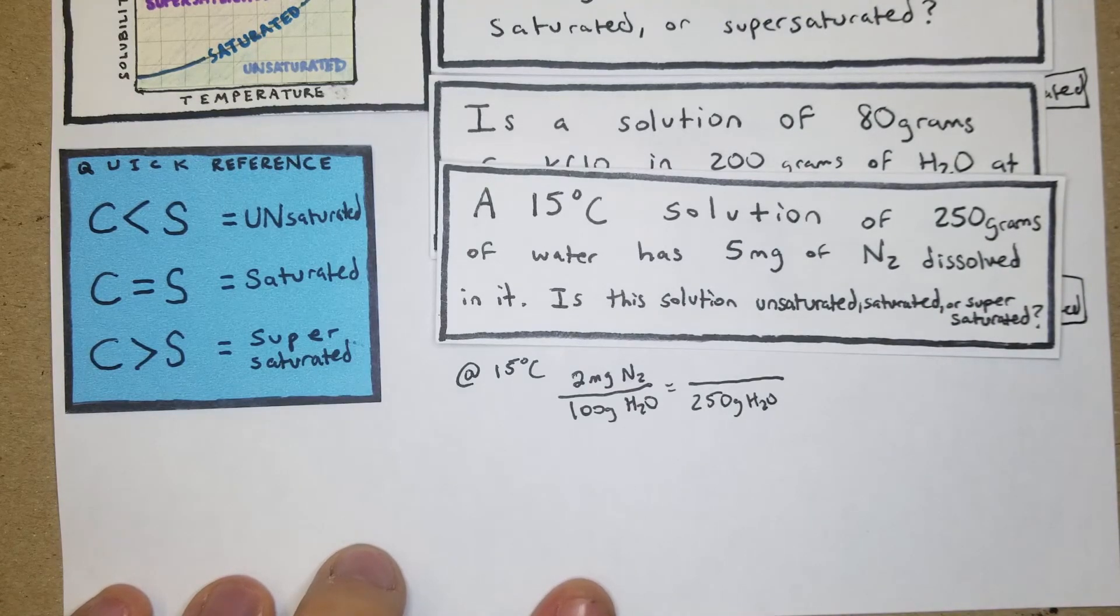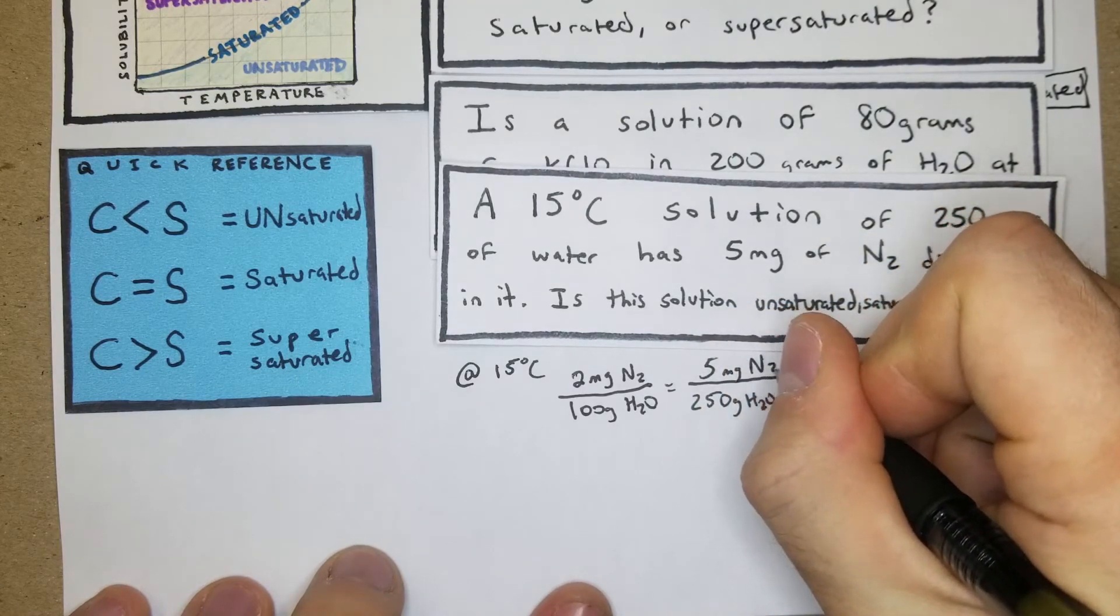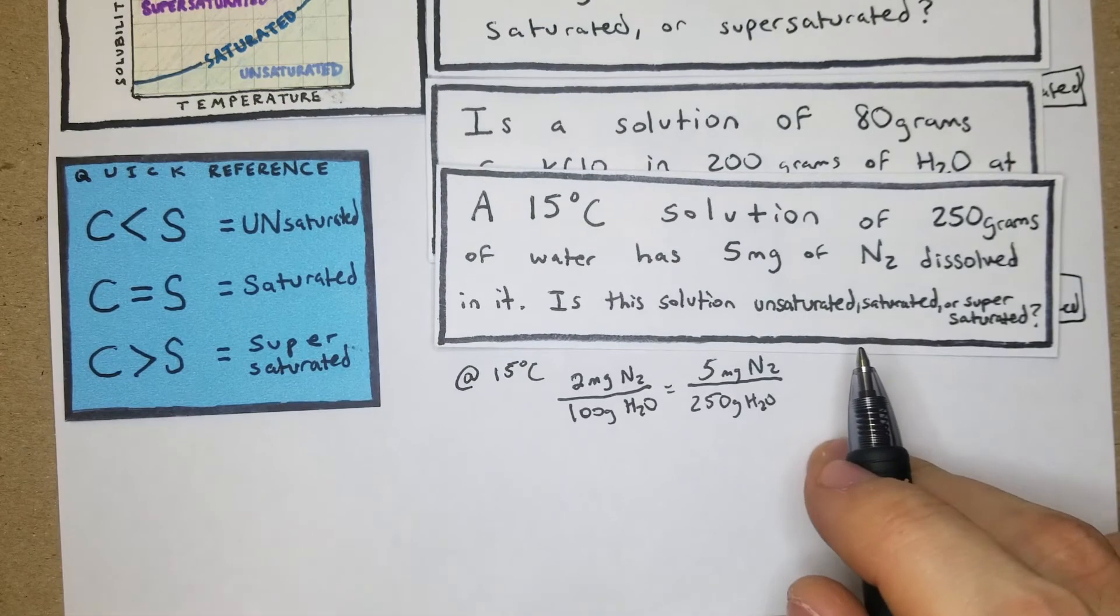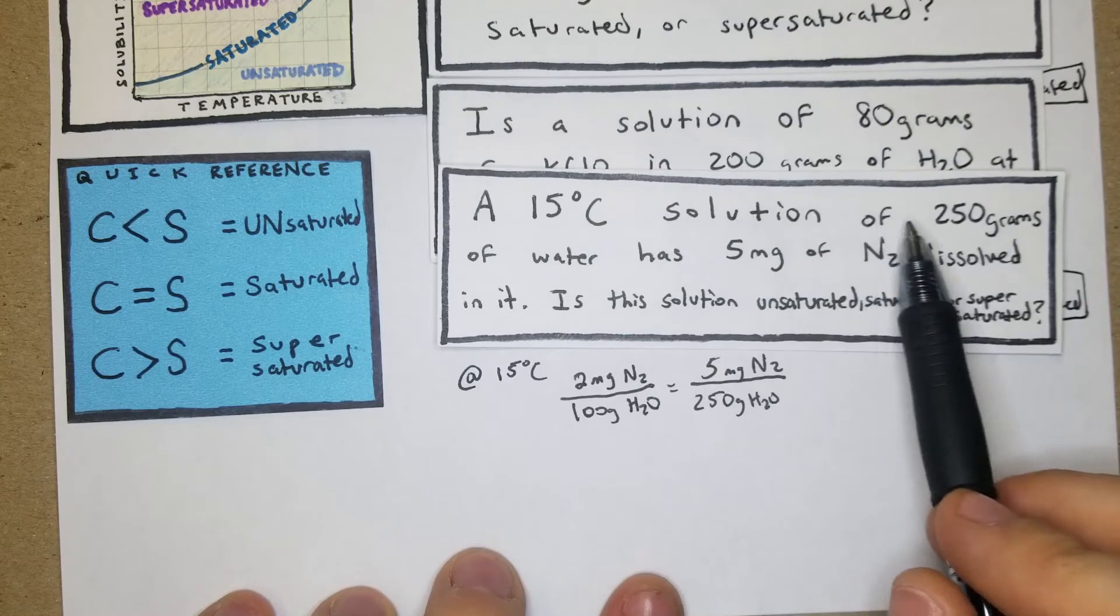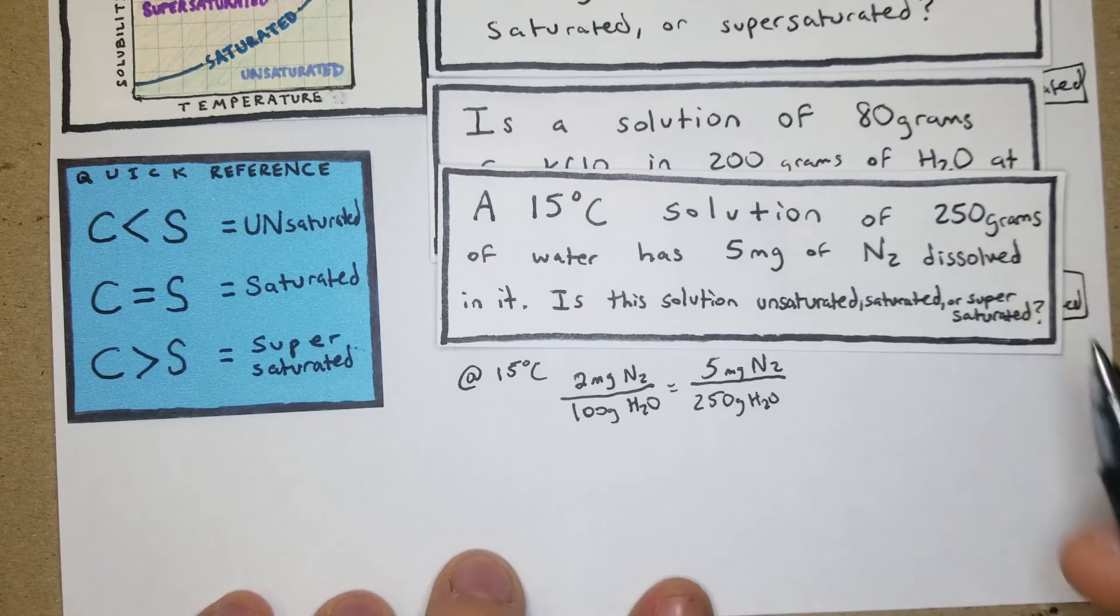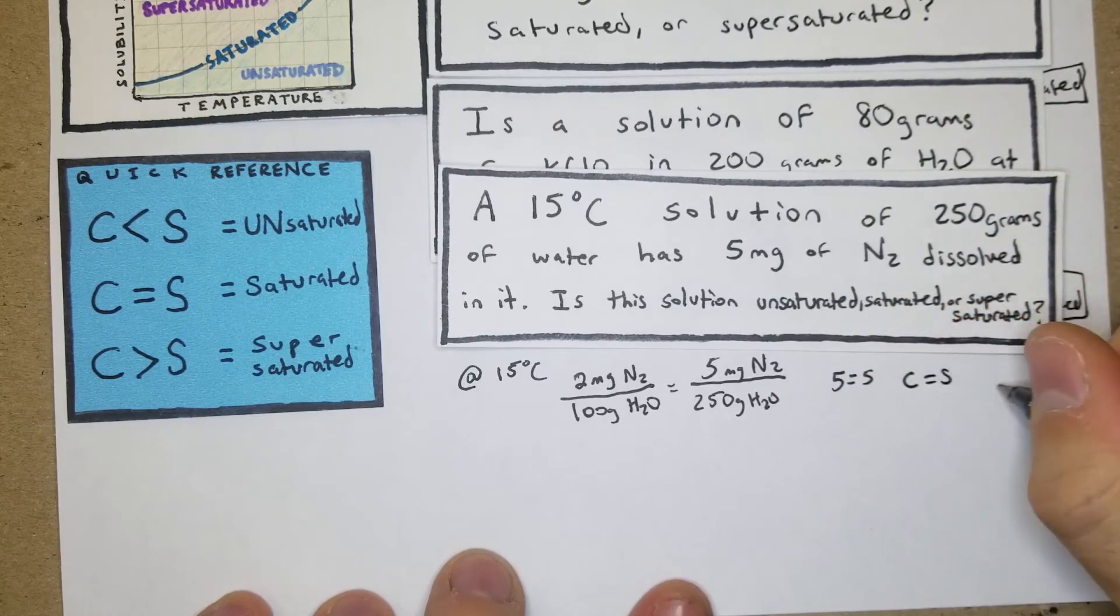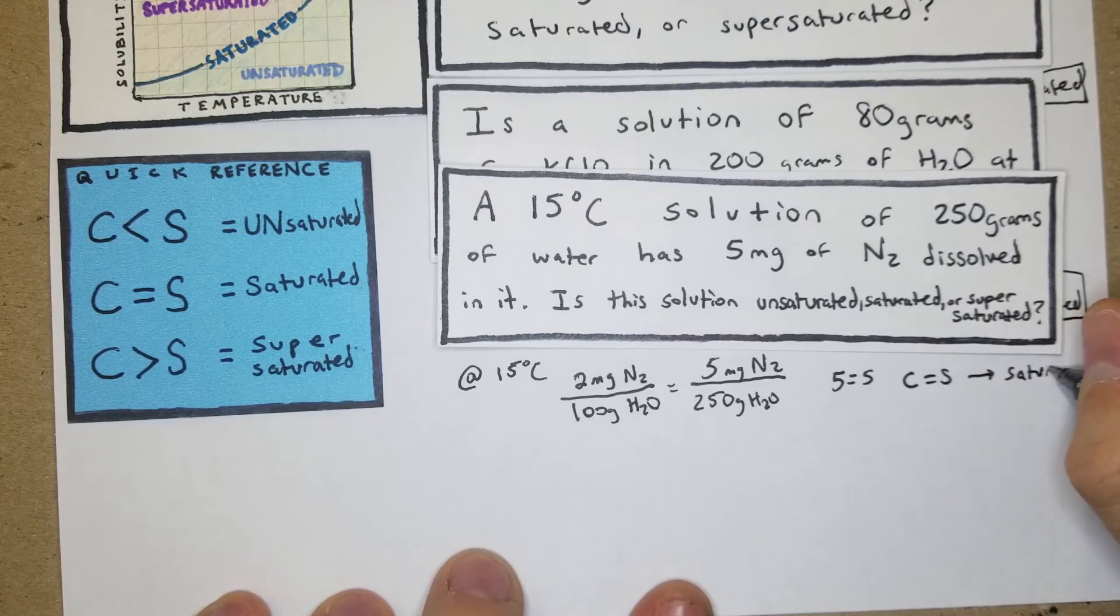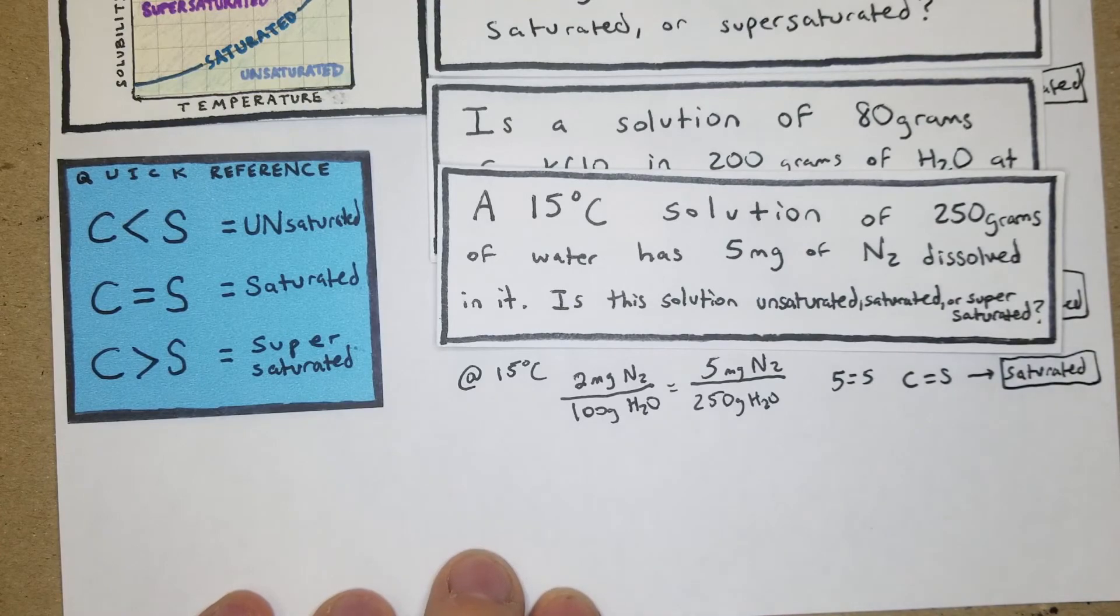We have 5 mg of N2 dissolved. A 15 degree solution of 250 grams of water has 5 milligrams dissolved in it, which means that 5 equals 5, or C equals S, which means that it's saturated.